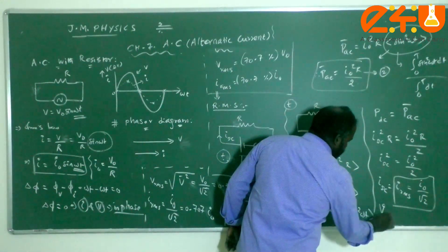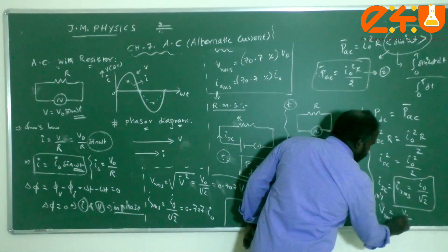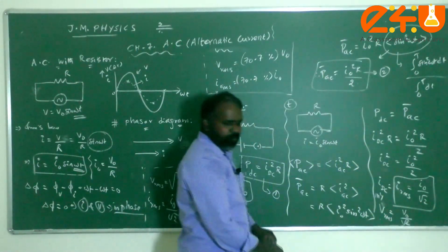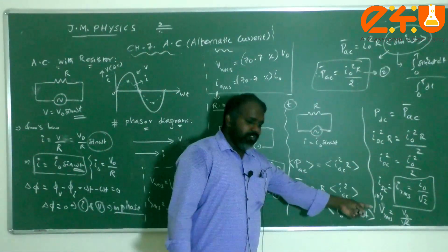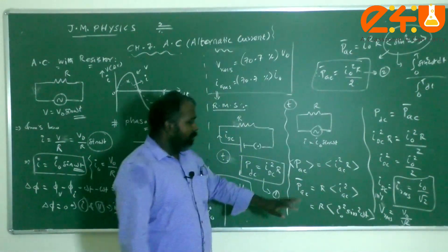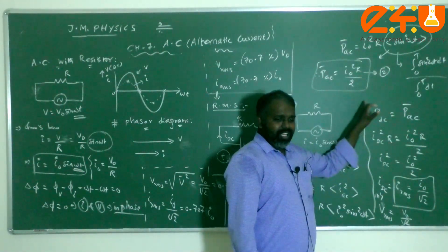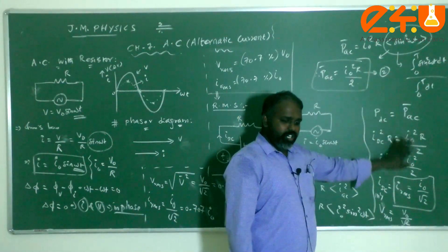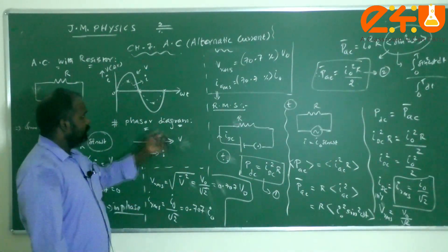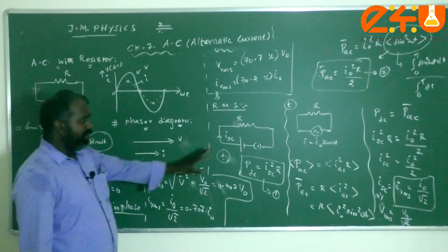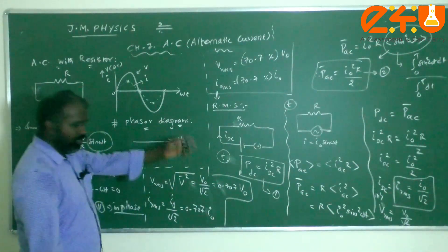Similarly for voltage, VRMS = V₀/√2. This is the conceptual meaning of RMS value: it is the equivalent DC current or voltage that produces the same power loss in a resistor as the AC current or voltage. I hope you now have a clear understanding of AC with resistor, the phasor diagram, and the RMS value from a physics conceptual point of view.